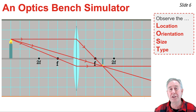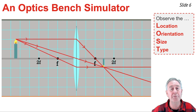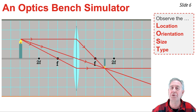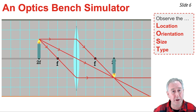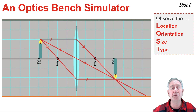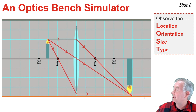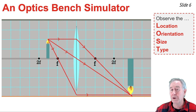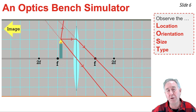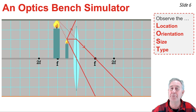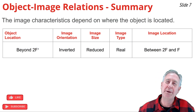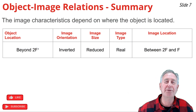When the object is located beyond 2F, the image is between the F and 2F position — it's reduced, real, and inverted. When the object moves to the 2F position, the image is also at 2F on the opposite side of the lens, the same size as the object, inverted, and real. When the object is between F and 2F, the image is enlarged, inverted, real, and located beyond 2F. Finally, when the object is between the focal point and the lens, the image is on the same side of the lens — upright, magnified, and virtual.